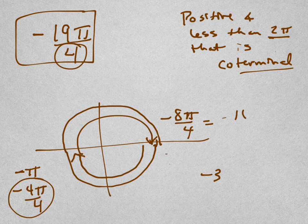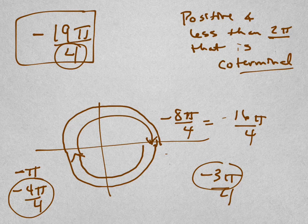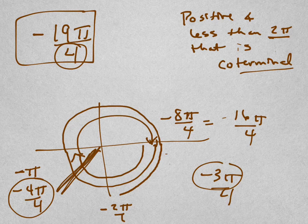This is negative 16π over 4, so I need 3 more π over 4, which would get me, where would it take me? This is negative 2π over 4, so it would take me right here. That's negative 3π over 4 from here, right?